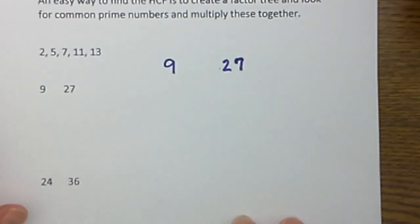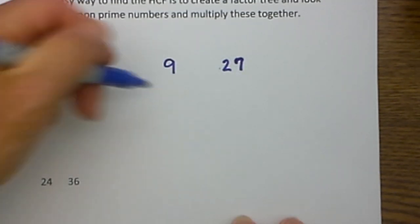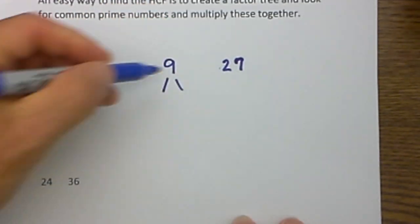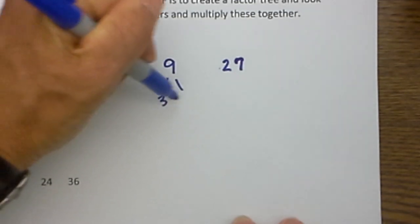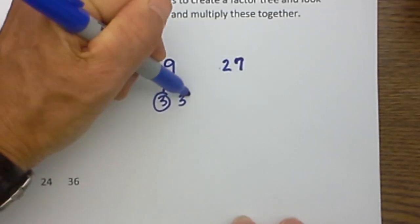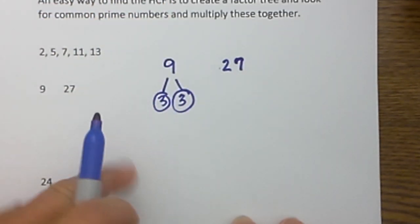We need to find the HCF or the highest common factor of these two numbers. I will begin by creating a factor tree for 9, and I know 3 times 3, and they are both prime, equals 9. The reason why I circled them is they are prime numbers, so I will circle each prime number.